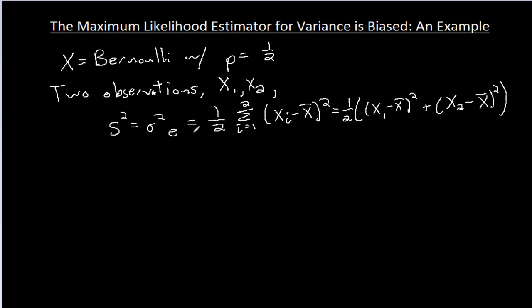And the reason I wanted to use a Bernoulli distribution is we can list out all the possible outcomes without it taking an entire day or two. Okay, so we've got two random variables, X1 and X2. They're both observations of a Bernoulli random variable with parameter p equals one-half. Well, there's four possibilities for the combination of outcomes here.